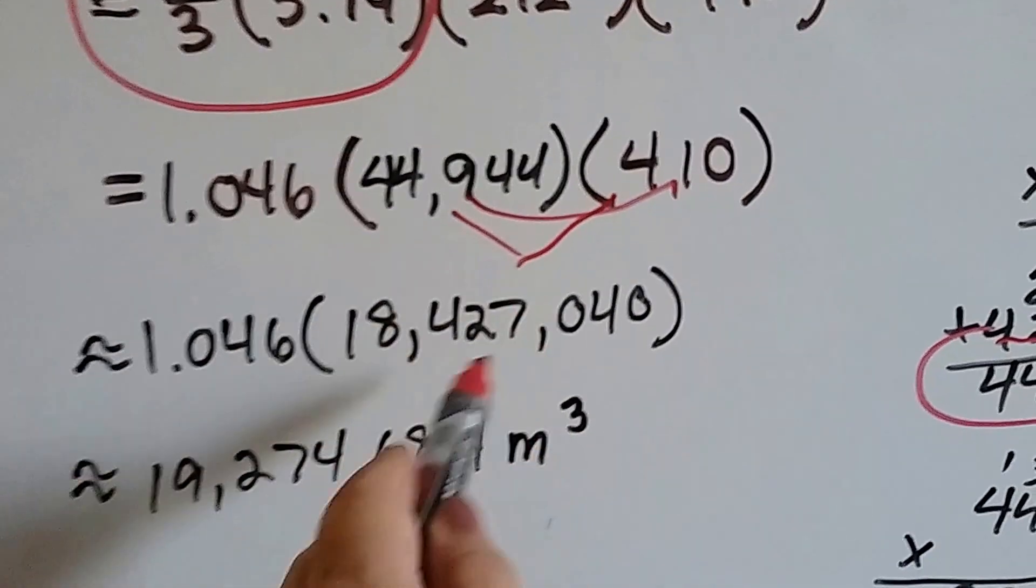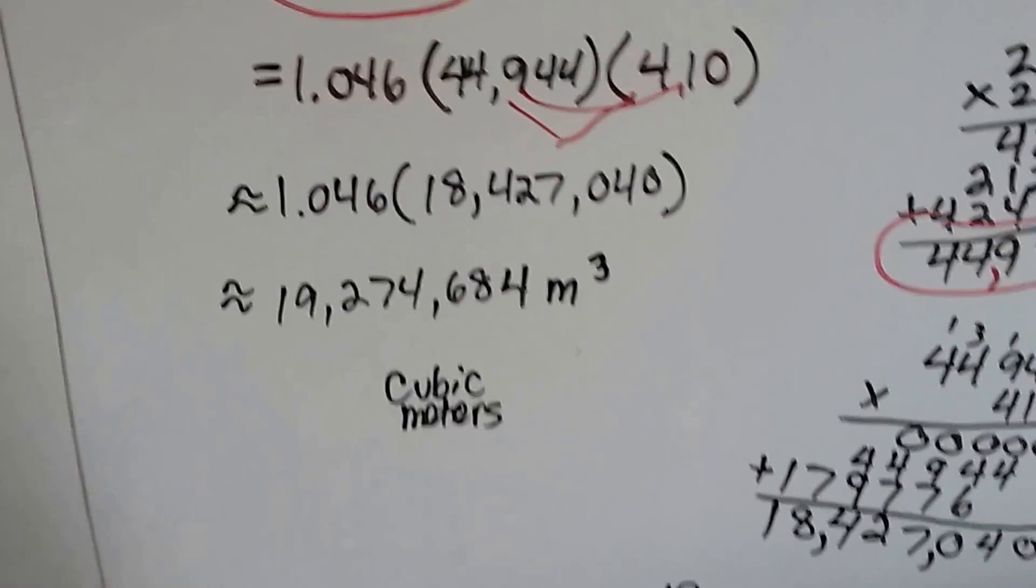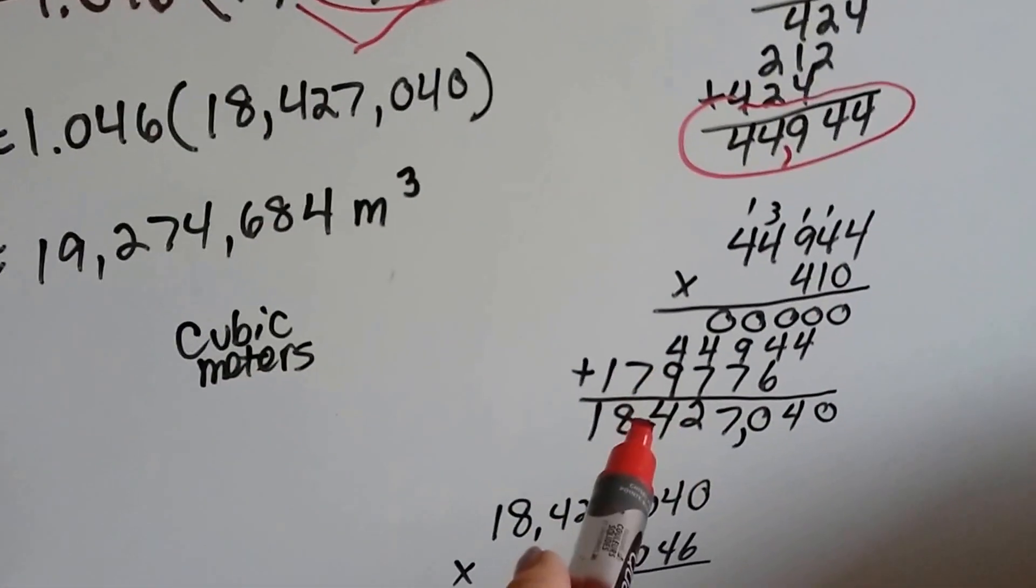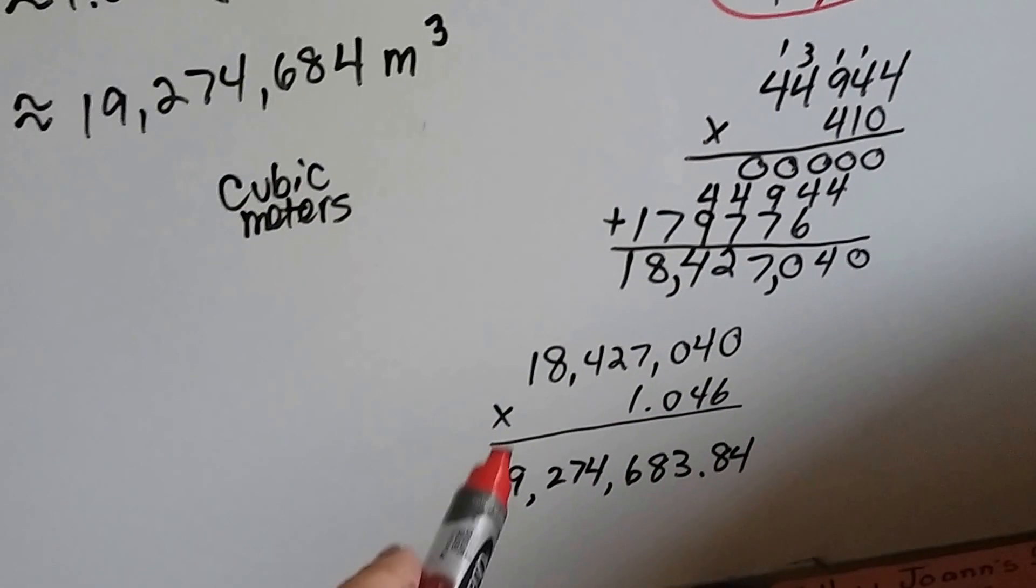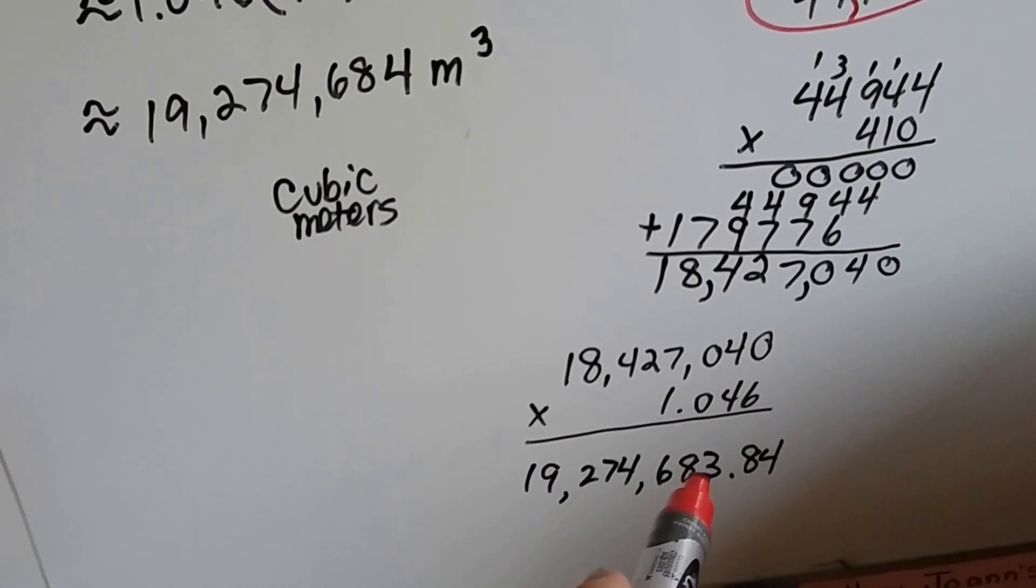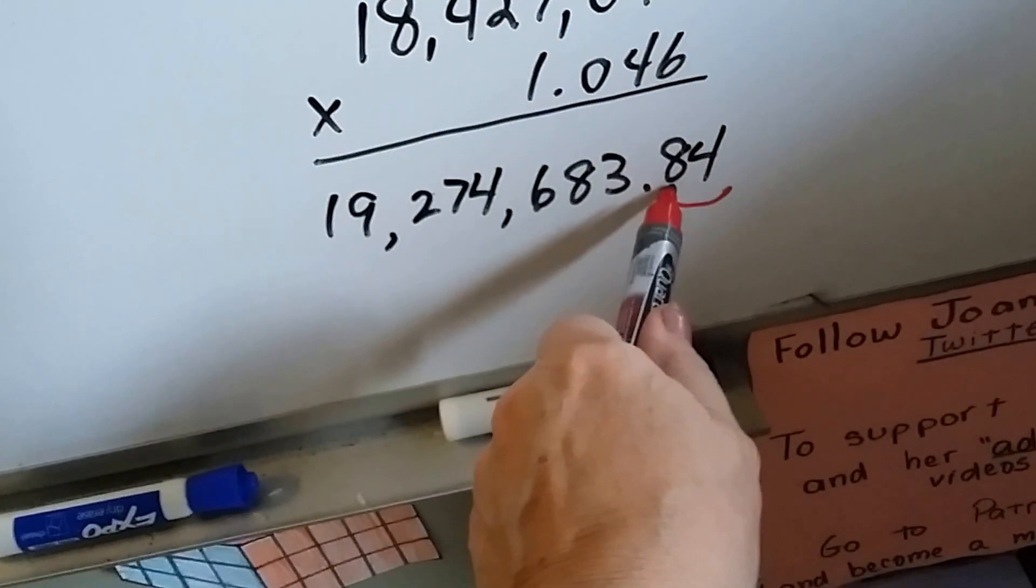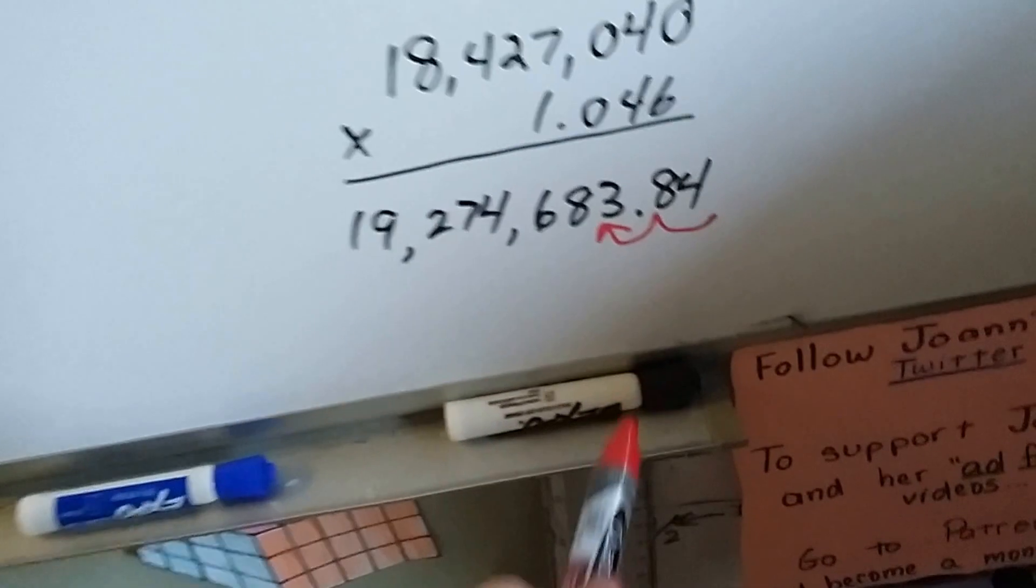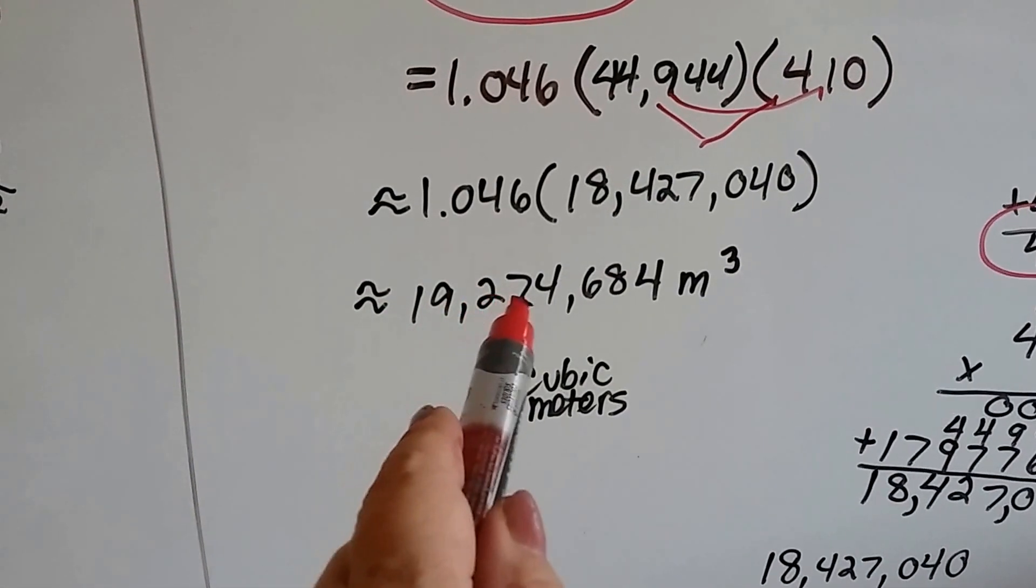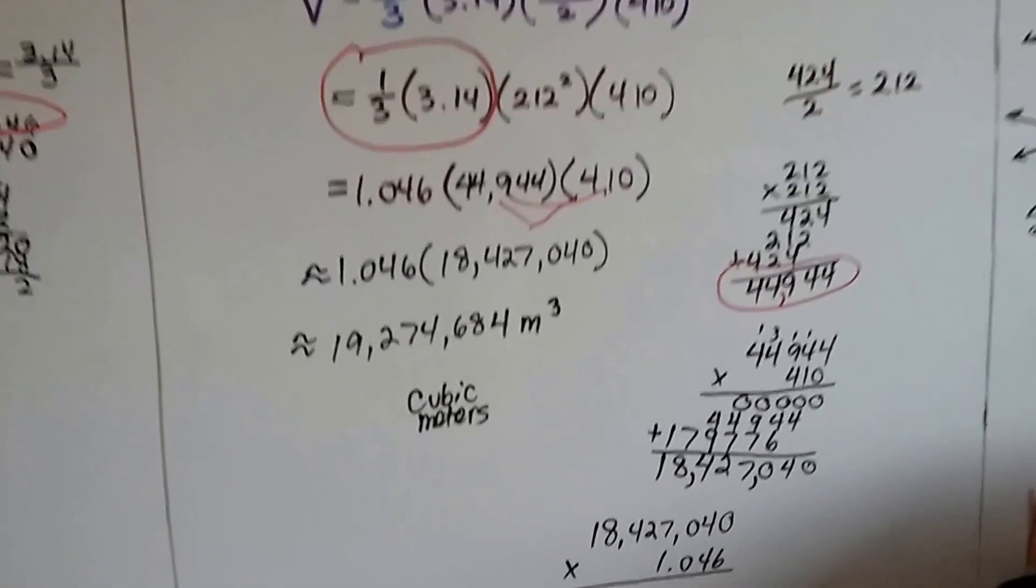So these two end up becoming this 18,427,040. Now we need to multiply it by the 1.046, and we do. And I got 19,274,683.84, and I rounded this .84 so that this would be a 4. I rounded it up. So we've got 19,274,684 meters cubed, cubic meters.